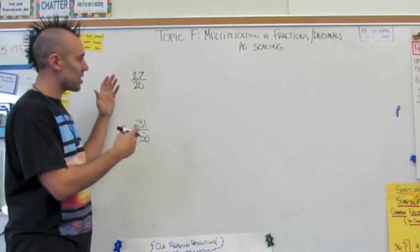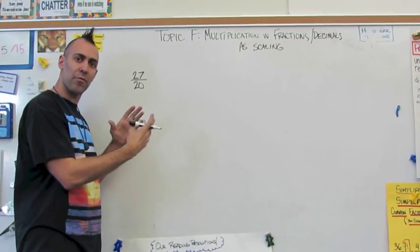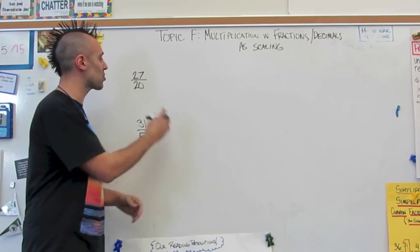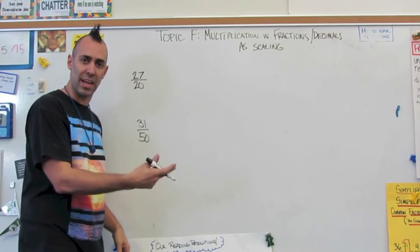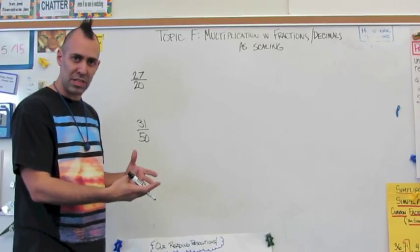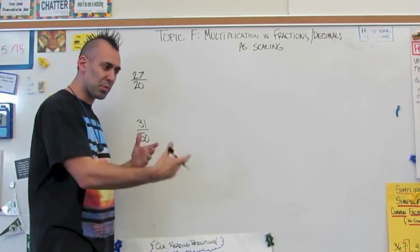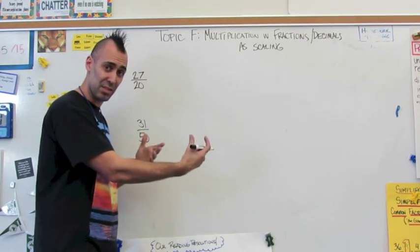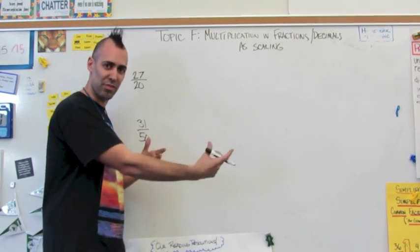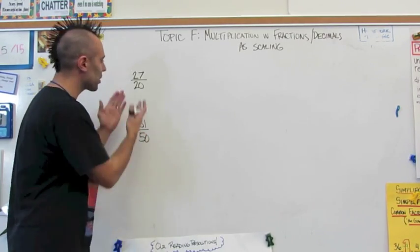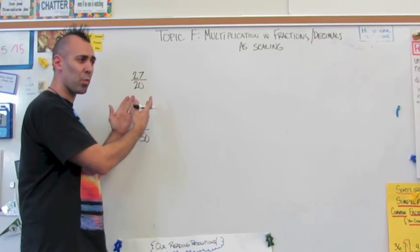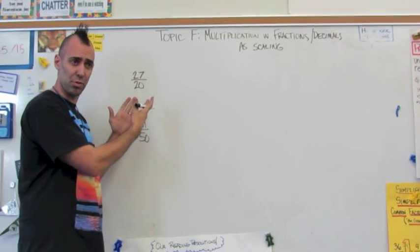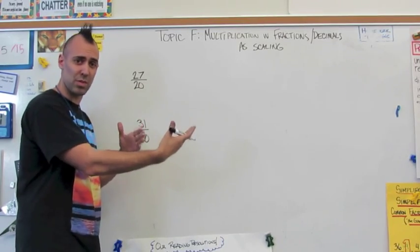When we translate a fraction to a decimal, the most important thing is that we make sure the denominator is a multiple of 10. When we think about decimal place values, each place value after the decimal point to the right is a multiple of 10: the tenths place, the hundredths place, the thousandths place. So we want to look at this denominator and say, what is the nearest multiple of 10 we can multiply this to so that we can translate it to a decimal?